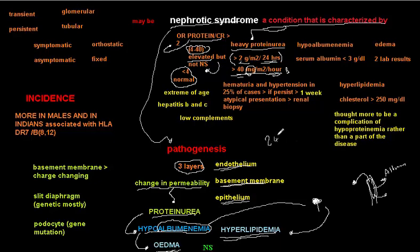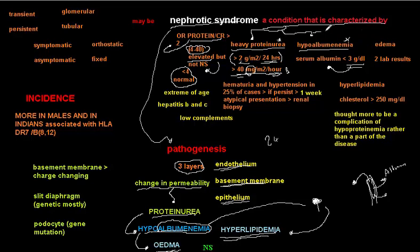To summarize: heavy proteinuria means more than 2 grams in 24 hours, or more than 40 milligrams in one hour. With proteins now in the urine, what happens to protein in blood? We have hypoalbuminemia — serum albumin less than 3 grams per deciliter — which is the second criterion. The first is proteinuria, then hypoalbuminemia, and the third is edema.